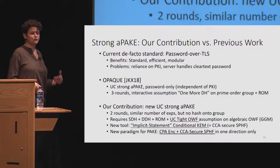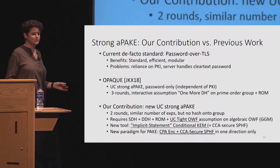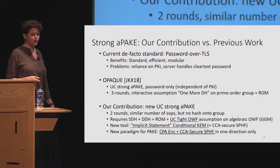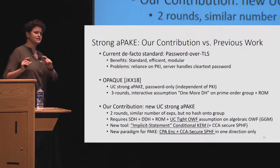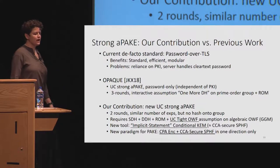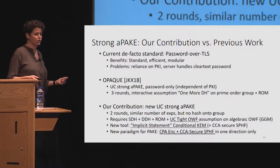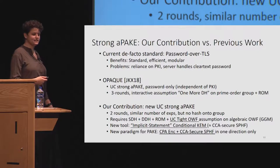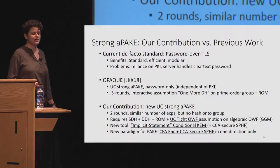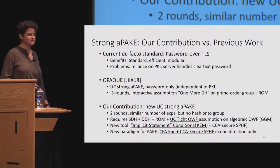Our contribution is proposing a new UC strong APAKE. We're able to shave off one round. We have a similar number of exponentiations, but we don't have to hash onto a group. We have a number of assumptions including ROM, and we also use GGM, but that is isolated into an offline part of the protocol. We're also proposing some new primitives: the UC tight one-way function and the implicit statement conditional CCAM. And we're showing how we can adapt an existing paradigm for PAKEs and UC PAKEs into a strong APAKE, and also shave off one half of that paradigm.